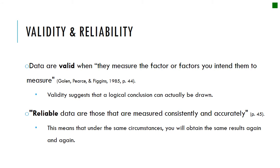When putting your study together, you always have to test for validity and reliability. Data is valid when it measures the factors you intend it to measure — if you're studying censorship on Twitter, you should still be measuring censorship on Twitter at the end, not something else. Reliability means the data is measured consistently and accurately. For example, if doing a content analysis counting how many times a name appears in newspaper headlines, you need a coding book that shows you've reliably and consistently tested for that.